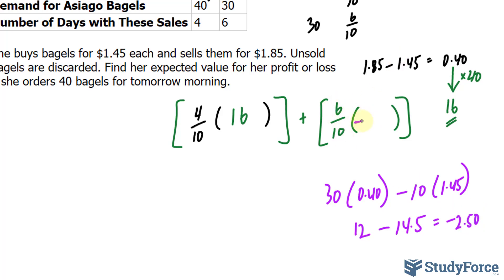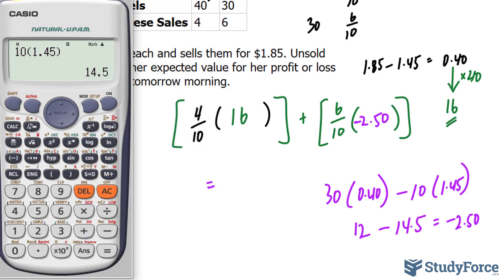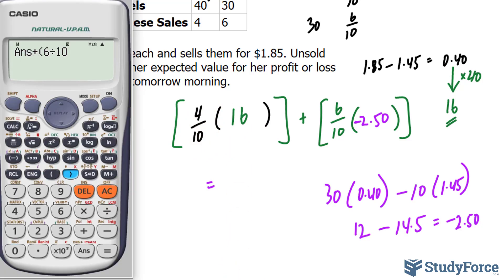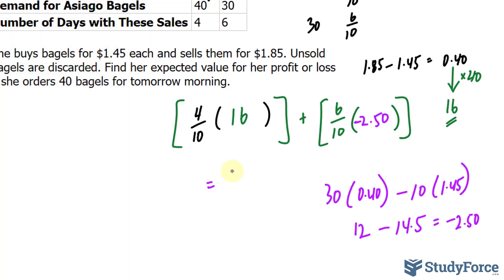We substitute this value — negative $2.50 — as the value associated with the 6 out of 10 probability. Calculating the expected value: (4/10 × $16) + (6/10 × negative $2.50). The expected value is $4.90. That's what she should expect as a profit if she orders 40 bagels tomorrow morning.